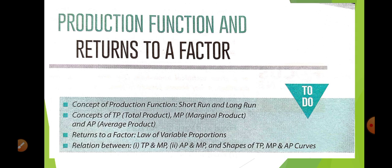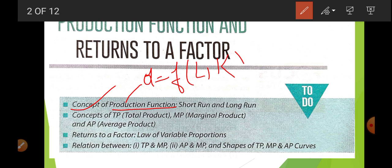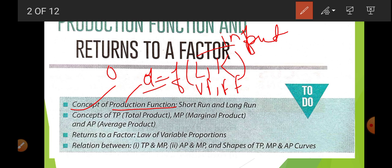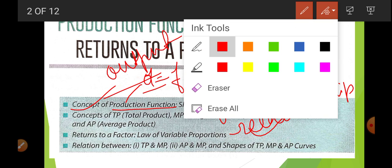So how much had we covered? Till now we had covered the concept of production function. What is production function? Q is a function of L and K — variable factor and variable factor. This L and K represent input and Q represents output. F stands for functional relation. So production function explains the functional relationship between input and output. This is the meaning of production function.